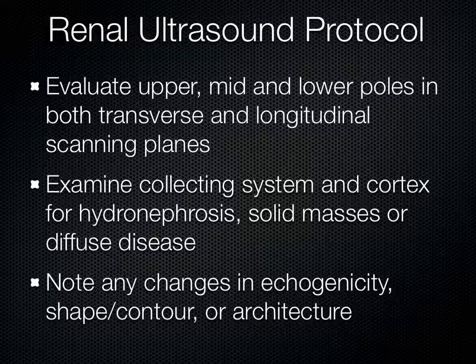When looking at the kidneys, think about the upper and lower poles. Upper means towards the head or superior; lower pole means towards the feet or inferior; and in between is the mid pole. You can look at them in their long axis, then flip the probe 90 degrees and look in short axis. You basically assess the whole system for its architecture, echogenicity, shape, and contour.